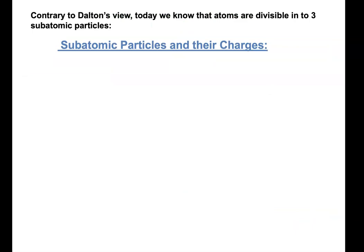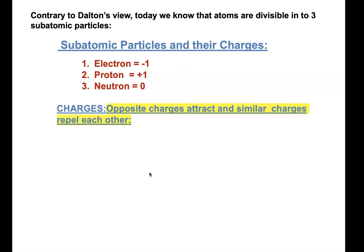Before introducing the next model, we need to review subatomic particles and their charges. Electrons, protons, and neutrons are the subatomic particles we know exist in atoms — meaning atoms are actually divisible. Electrons each have a −1 charge, protons each have a +1 charge, and neutrons each have a 0 charge, because neutrons are made of a proton and an electron together, canceling out. Opposite charges attract and like charges repel.